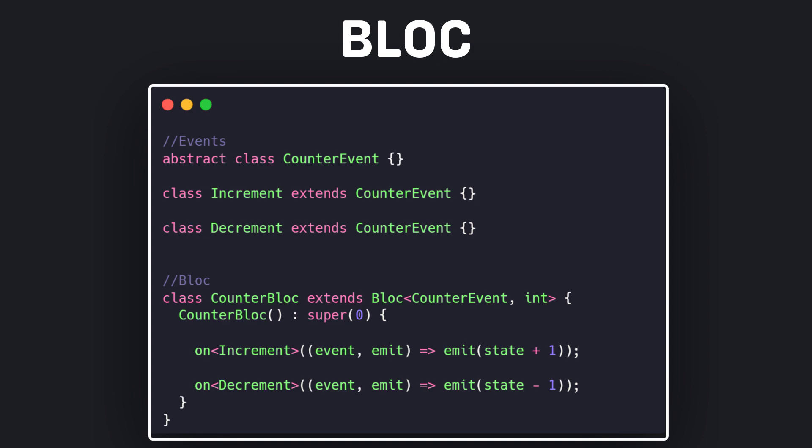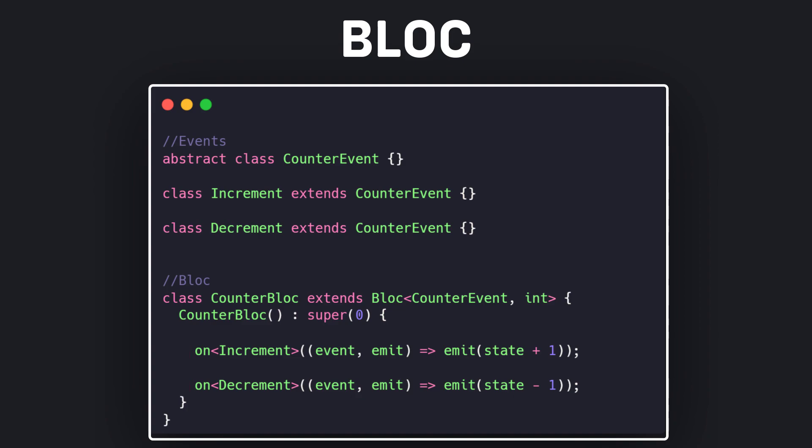Bloc requires us to register event handlers using the onEvent API. An event handler is responsible for converting any incoming events into zero or more outgoing states. In order to create a bloc, we must define our own events in the form of classes and then register the event handler for those classes. Defining the events and registering them takes time and requires us to write more code.